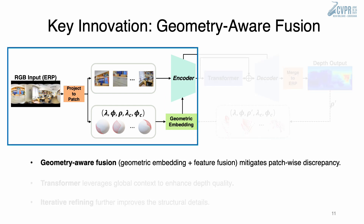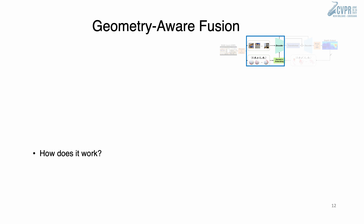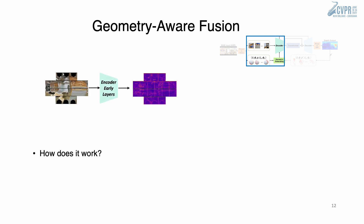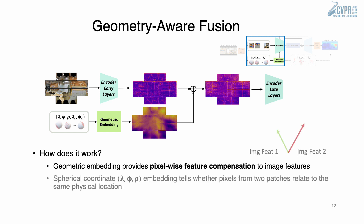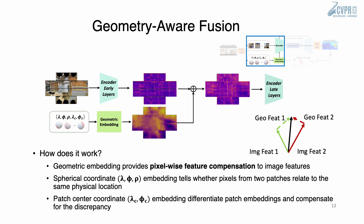Let me introduce more details about our key innovation, geometry-aware fusion. We encode both spherical coordinates and patch center coordinates for geometric feature embedding. The geometric embedding can provide pixel-wise feature compensation to 2D image features. Spherical coordinate embedding tells whether pixels from two patches relate to the same physical location, while patch center coordinate embedding differentiates patch embeddings and compensates for the discrepancy.